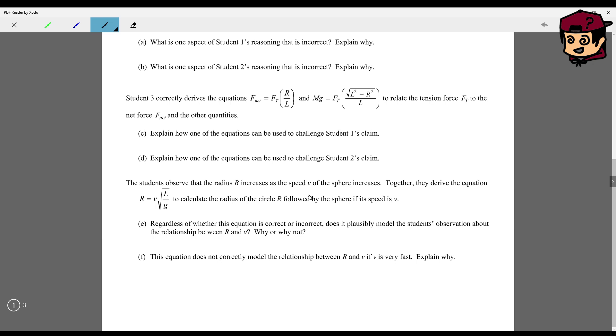Now, the students observed the radius r. Regardless of whether this equation is correct or incorrect, does it plausibly model the student's observation about the relationship between r and v? Why not? Well, of course. Because they said that the radius r increases as the speed v of the sphere increases. And here we can see, mathematically, if r goes up, v must go up. And why is that? Because l and g are constant. So write a sentence about that.